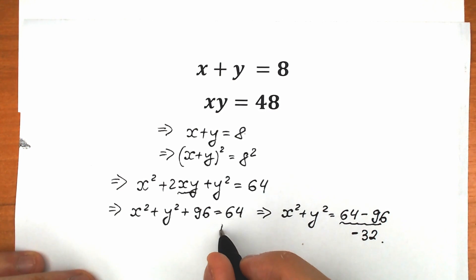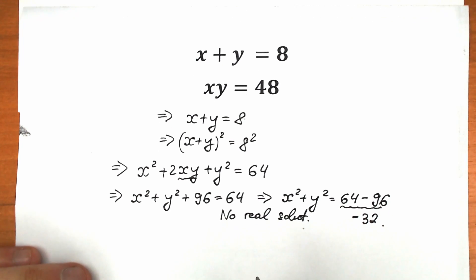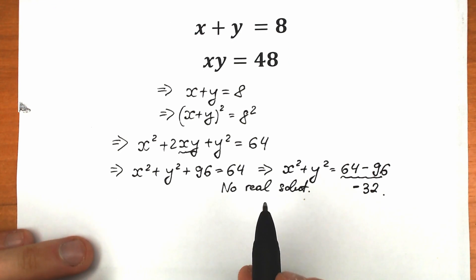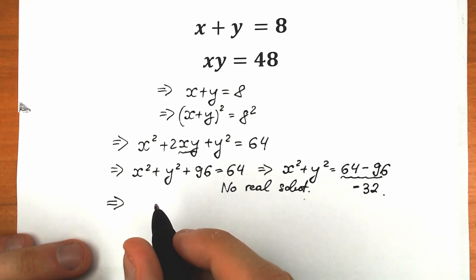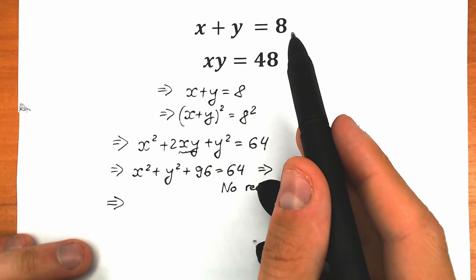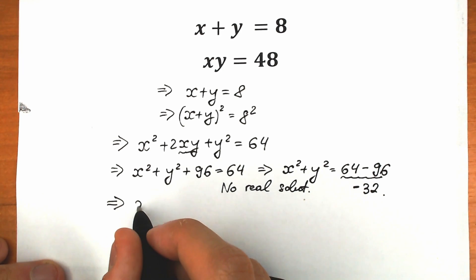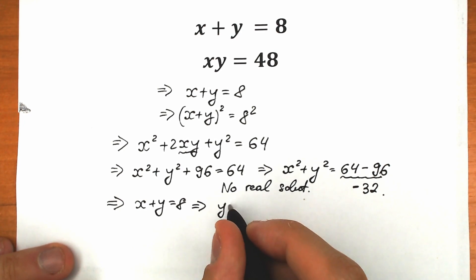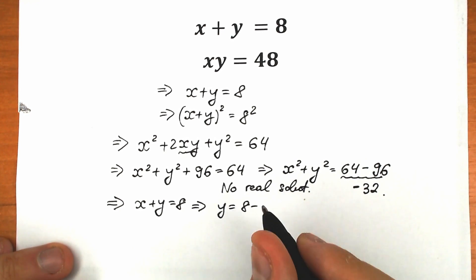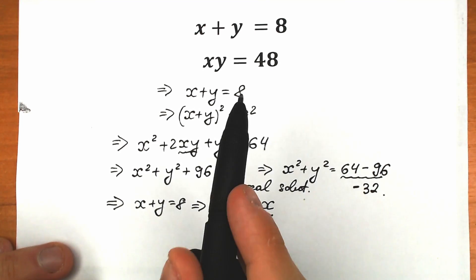As a result, we are talking about complex solutions. We don't have real solutions here — only complex ones. So how do we find our complex roots? This is a basic plug-in method. From the first equation, x plus y equals 8, we can isolate y, so y equals 8 minus x.